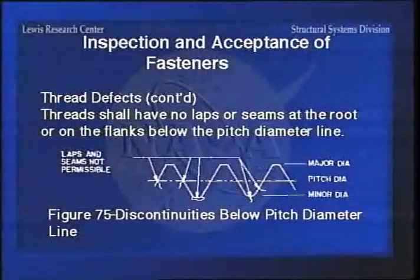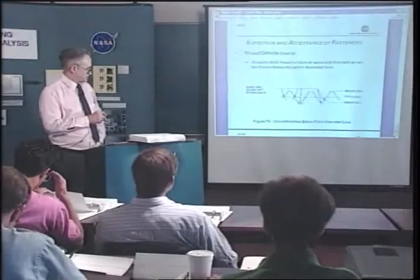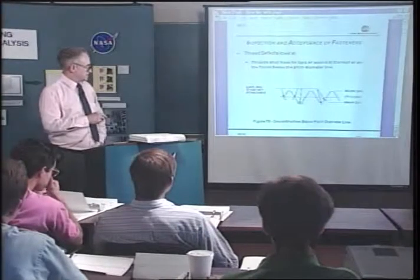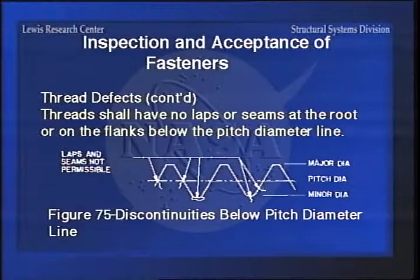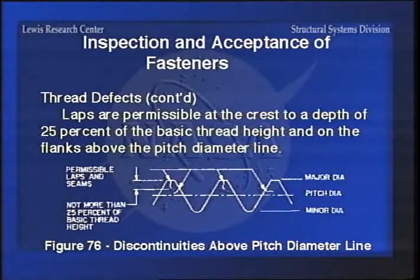Threads should have no laps or seams at the root or the flanks of the thread. In general, any defects below the pitch diameter are not accepted, because you're loading that part of the thread a lot more. So anything below the pitch diameter with a noticeable defect - you're not going to accept it. When you get things above the pitch diameter, you can accept more defects there because it is more lightly loaded, but even so there are limits on how much you can accept.